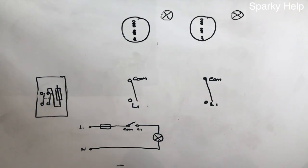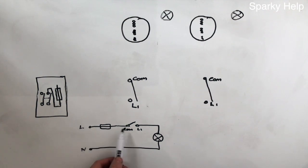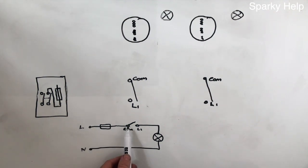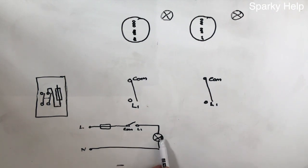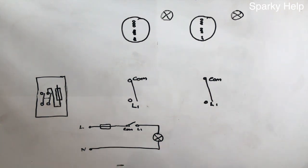For one-way lighting, we'll do this as a three-plate system. Here we have a circuit diagram showing a line, a neutral, a fuse, and a one-way switch with common and L1, then we go to the lamp and back to the neutral. If we can remember that, we can then apply it to three-plate wiring.